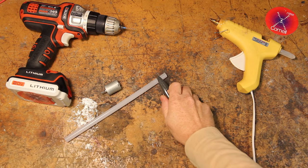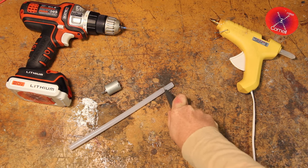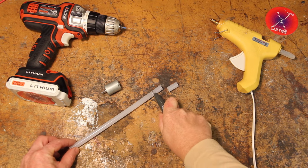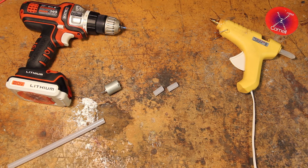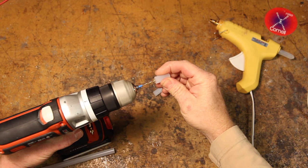First, out of a large glue stick, cut two one-inch pieces. Then, using an eighth-inch drill bit, drill about one centimeter into the end of a glue stick.